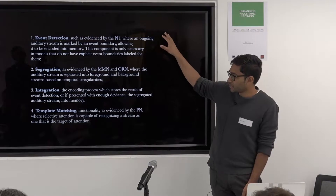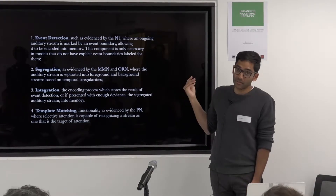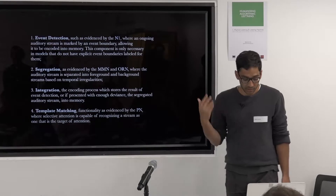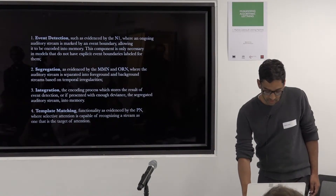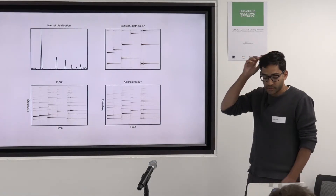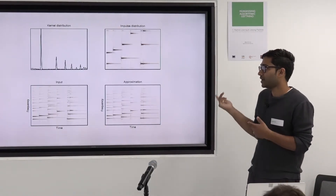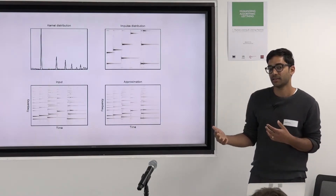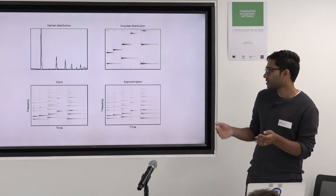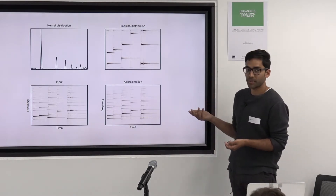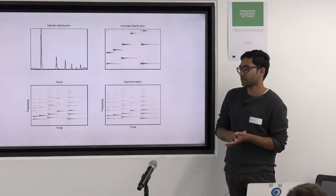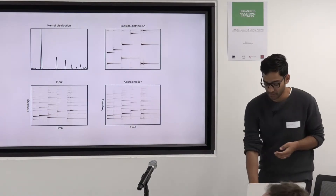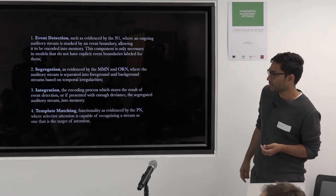I grouped four basic event-related potentials into a model of event detection, segregation, integration, and template matching, which you can read more about in my thesis. Along with that theoretical framework, I used a computational model — source separation, which many of us are more familiar with. There's ongoing scene processing that's able to do segregation, integration, and template matching. Principle latent component analysis is one method of forming this sort of segregation. When combined with onset detection, we're able to complete the loop of this conceptual framework of how it is that we listen.